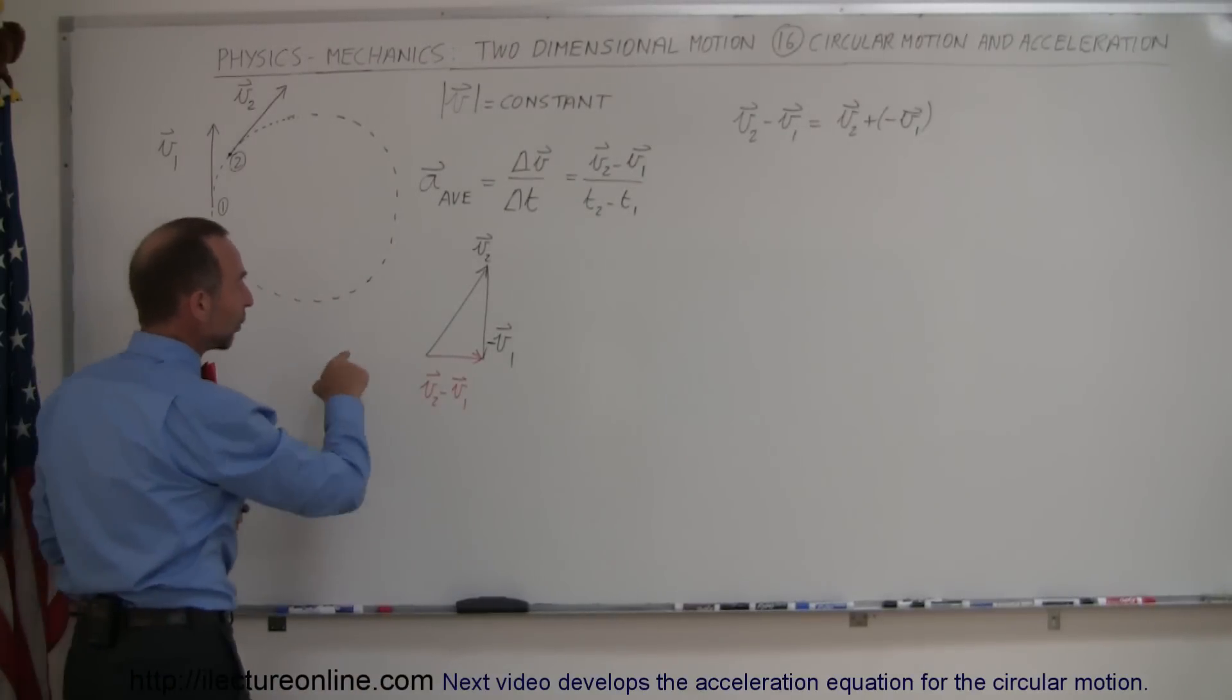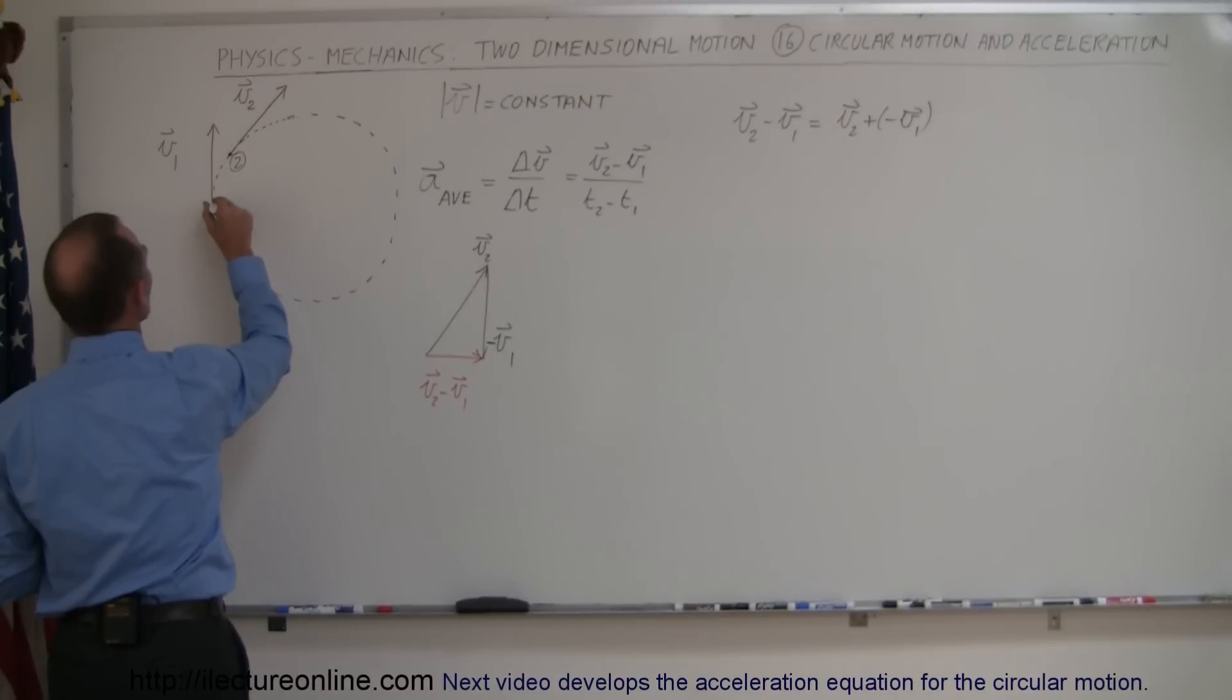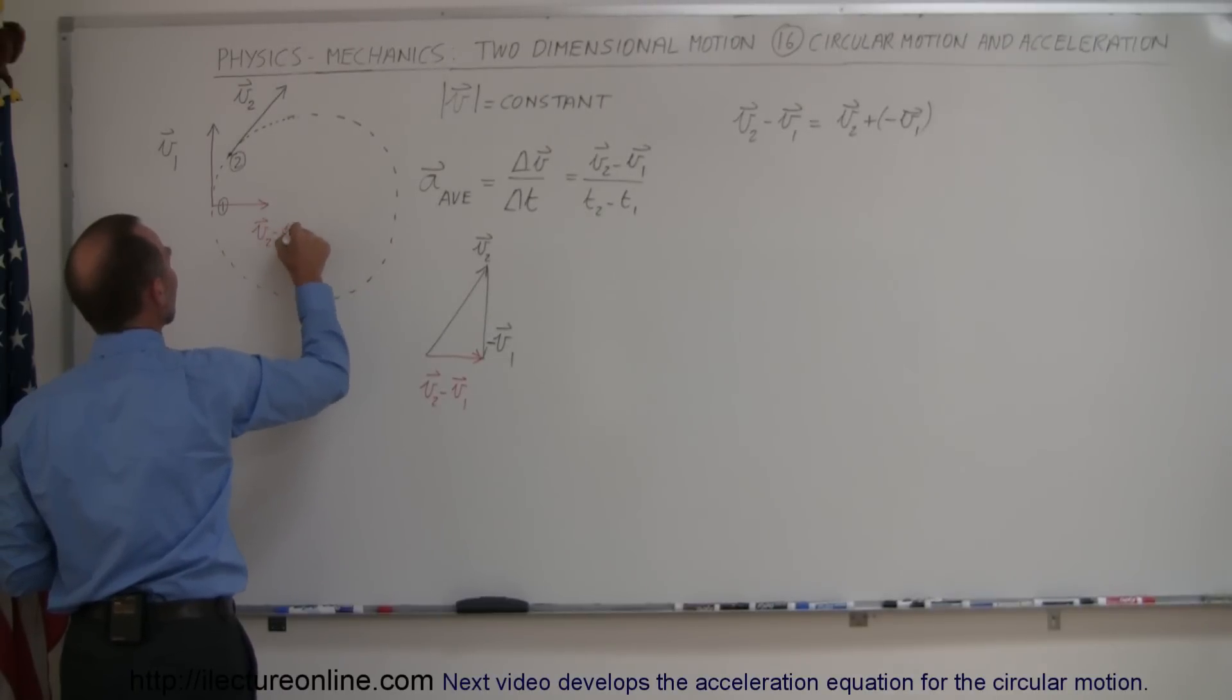Notice that vector points directly to the right from this location right here, so actually it points perpendicular from the path or the circular pattern like that. So this is here, v2 minus v1.